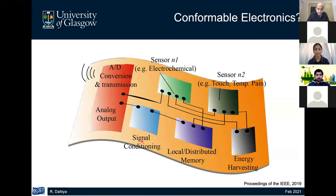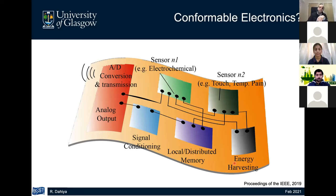In my view, the definition of electronic skin or conformable tactile skin involves multiple functionalities: multiple types of sensors — electrochemical, physical, biosensors — all integrated on the same substrate as required by the application. It also involves energy harvesting to power these sensors, data storage, signal conditioning, and finally wired or wireless communication to transmit data. In a sense, electronic skin is a complete system — a sensitive mini-computer that can sense ambient conditions, is self-powered, and can extract and transmit useful information from its sensors.